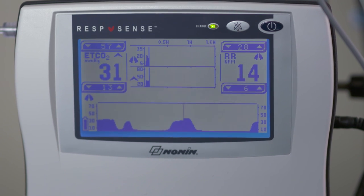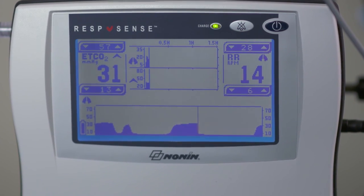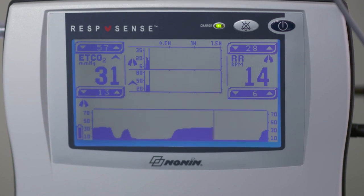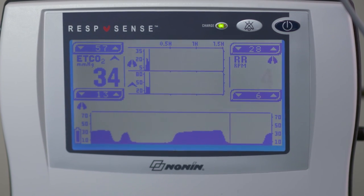If the patient begins to hypoventilate, you may see the breaths become farther apart as the respiration rate slows or the height of the waveform increase as the CO2 increases.